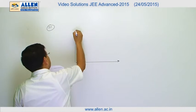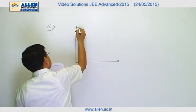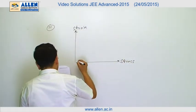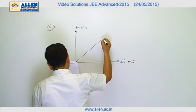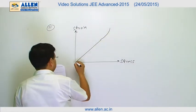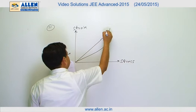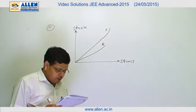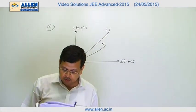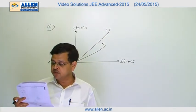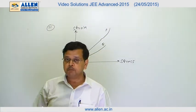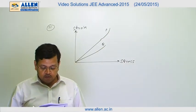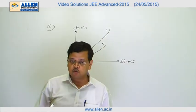Considering the graph between strain and stress, the graph for P goes like this and for Q it goes like this. As we can see, P breaks after a much greater value of stress compared to Q — that means P has more tensile strength than Q. Similarly, P can undergo more strain, so it is more ductile.